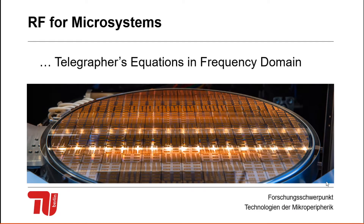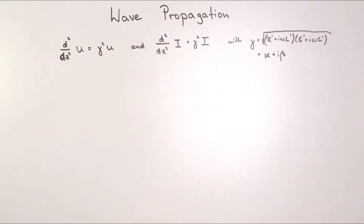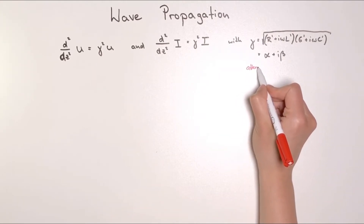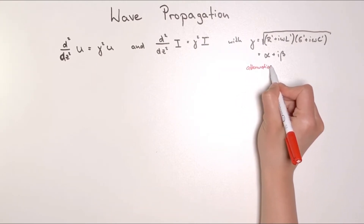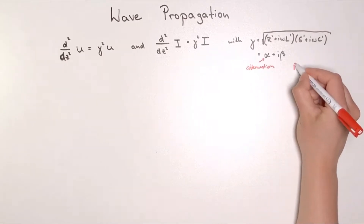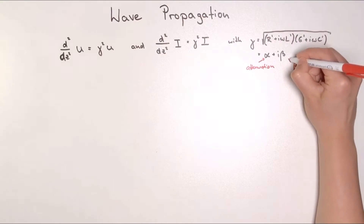After that quick recap, let's jump into the equations. First we write down what we already had, and as a reminder, gamma is split into two parts: the attenuation, which is alpha, and the phase information, which is beta.